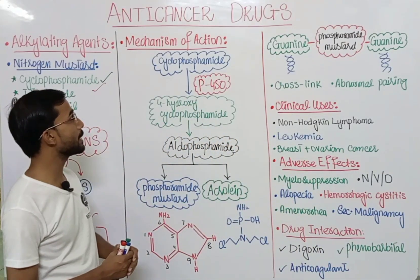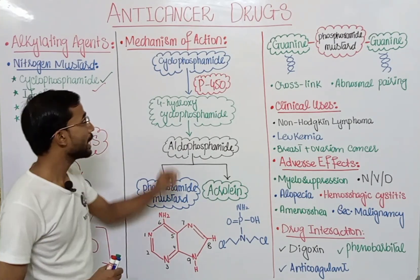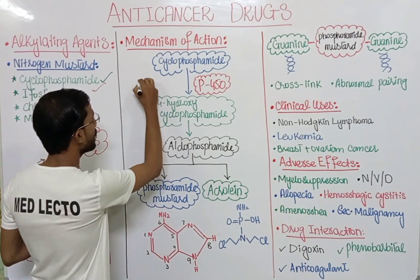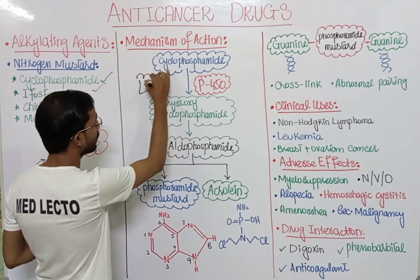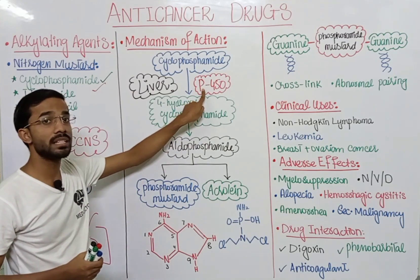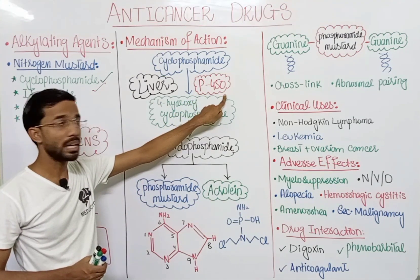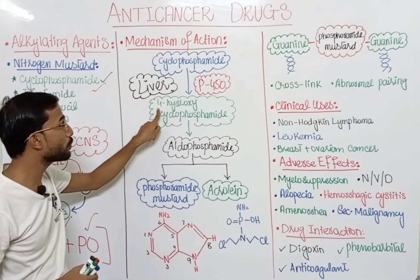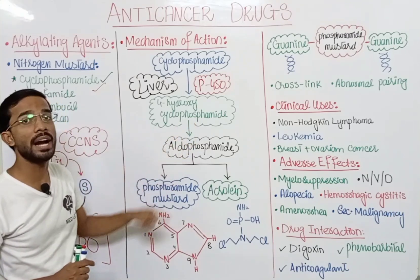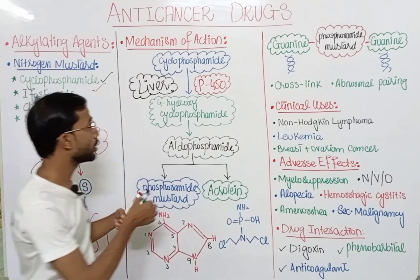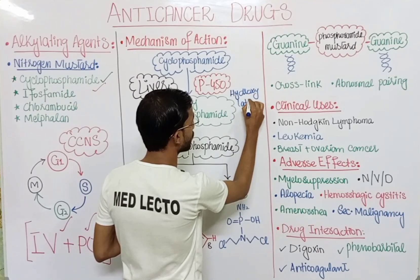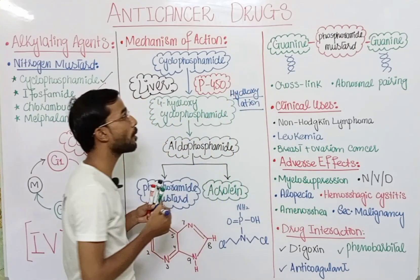If someone takes cyclophosphamide, it first goes to the liver. In the liver, as we know, there is cytochrome P450, which converts cyclophosphamide into 4-hydroxy cyclophosphamide. This means that in the liver you will see hydroxylation of cyclophosphamide with the help of cytochrome P450.